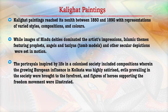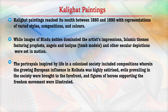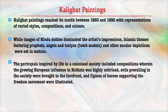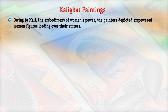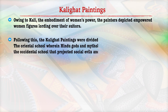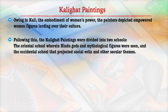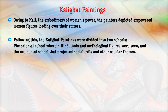The portrayal inspired by life in the colonized society included compositions where the growing European influence in Calcutta was also depicted. The evils prevailing in society were brought to the forefront and figures of heroes supporting the freedom movement were illustrated. Owing to Kali — the embodiment of woman power — the painters depicted empowered woman figures. The Kalighat paintings were further divided into two schools: the Oriental school, which focused on Hindu gods and mythological figures, and the Occidental school, which projected social evils and secular themes.